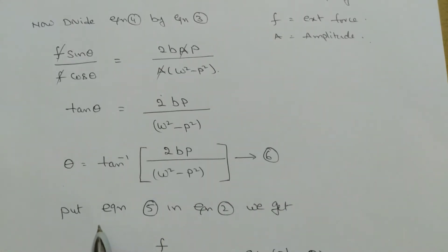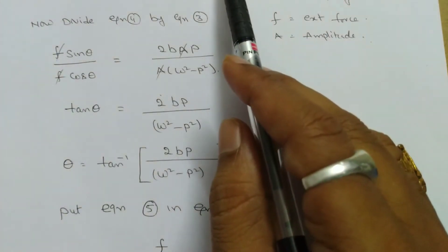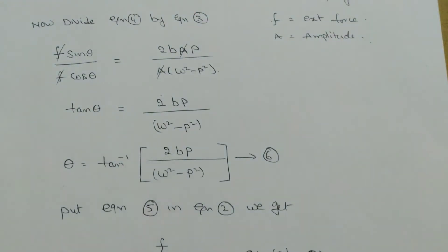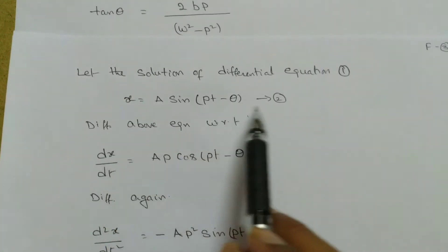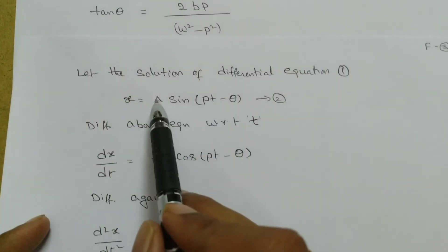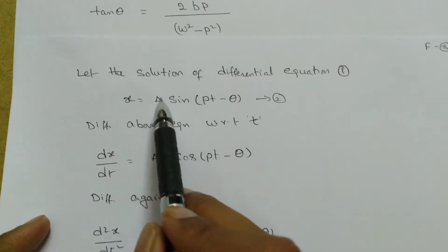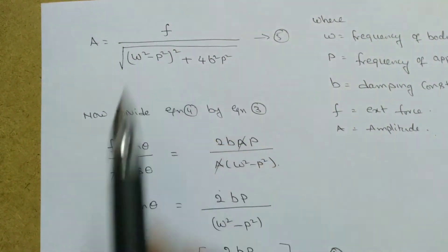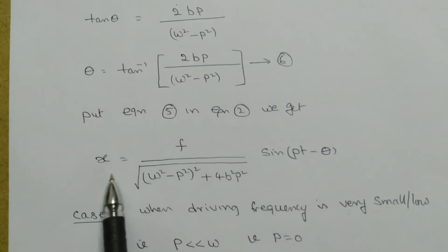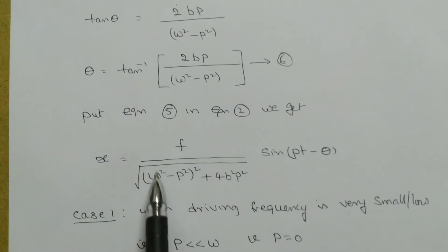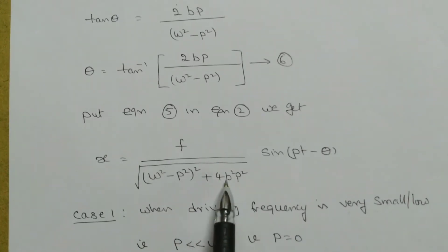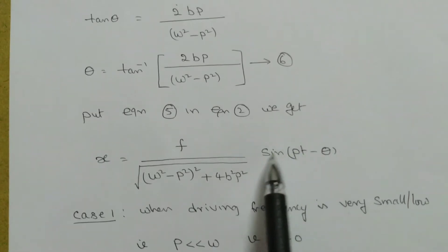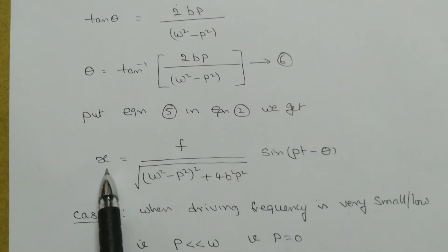Substituting equation 5 into equation 2, we get the complete solution: x = [f / √((ω²−p²)² + 4b²p²)] · sin(pt − θ). This is the displacement of the forced oscillator as a function of time.